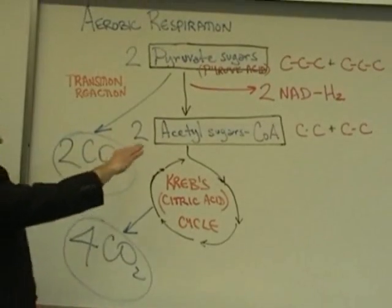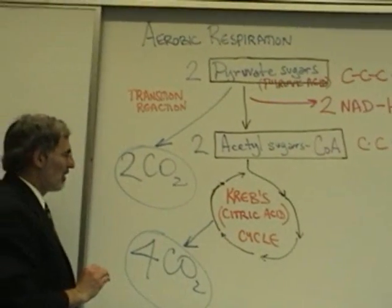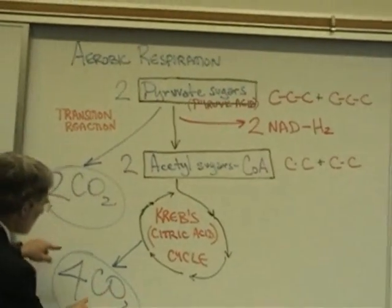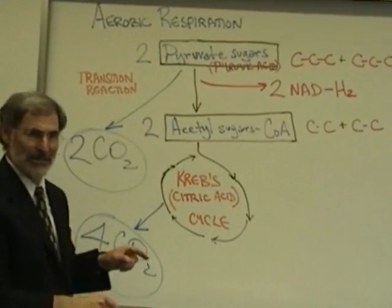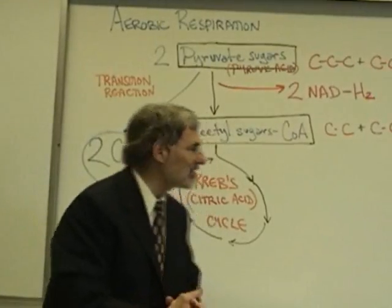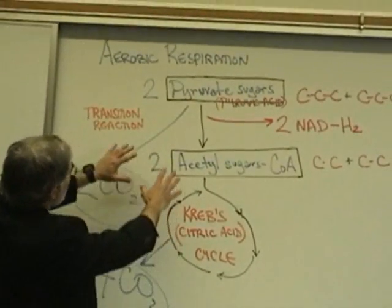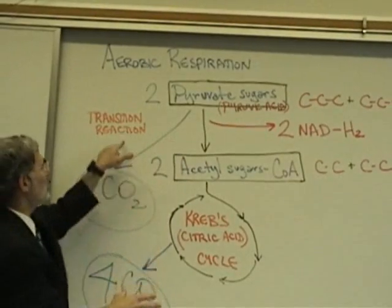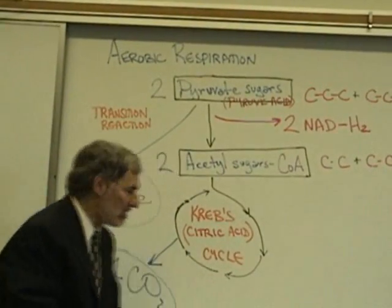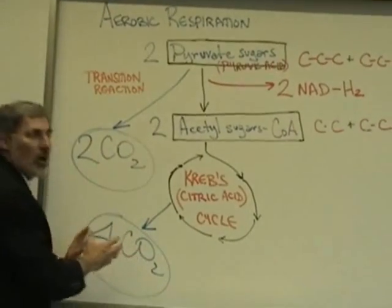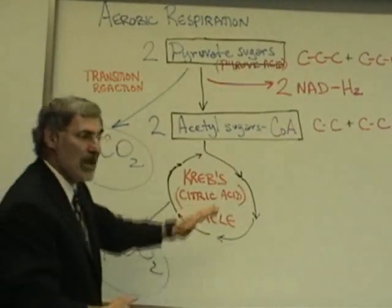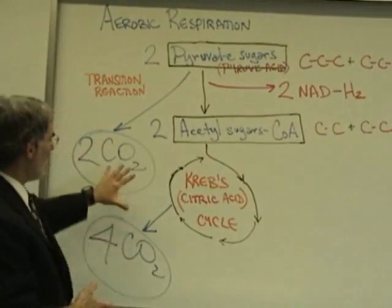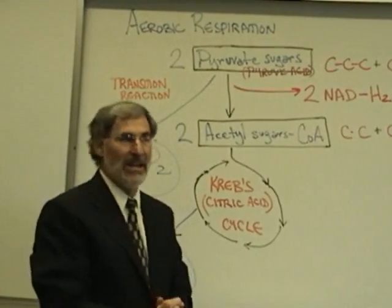Notice that by the end of the Krebs cycle, the sugar has been totally broken apart into six carbon dioxides. Two carbon dioxides were formed in the transition reaction of aerobic respiration; the remaining four carbon dioxides were formed in the Krebs cycle series of reactions of aerobic respiration. That's a grand total of six carbon dioxides.